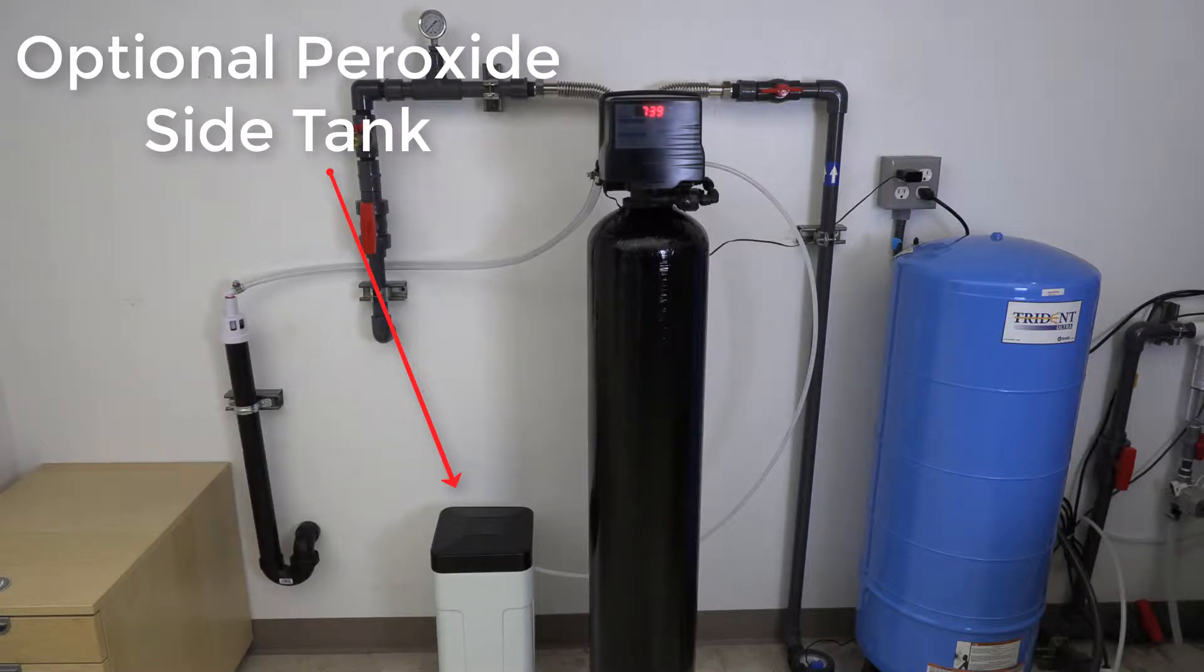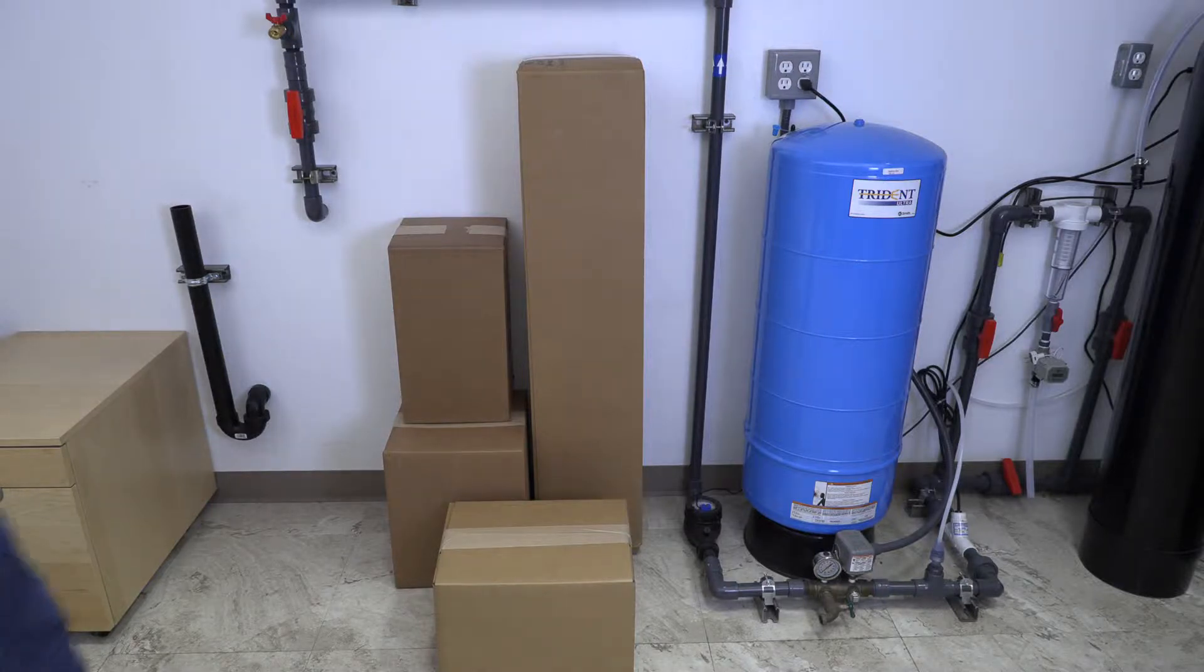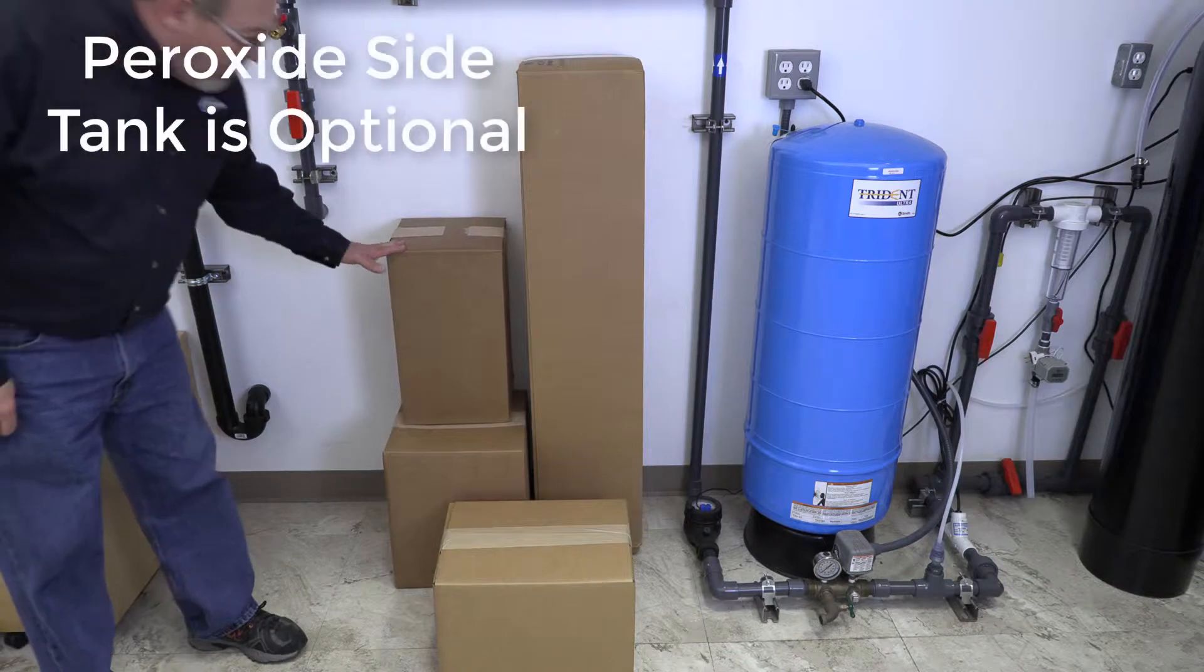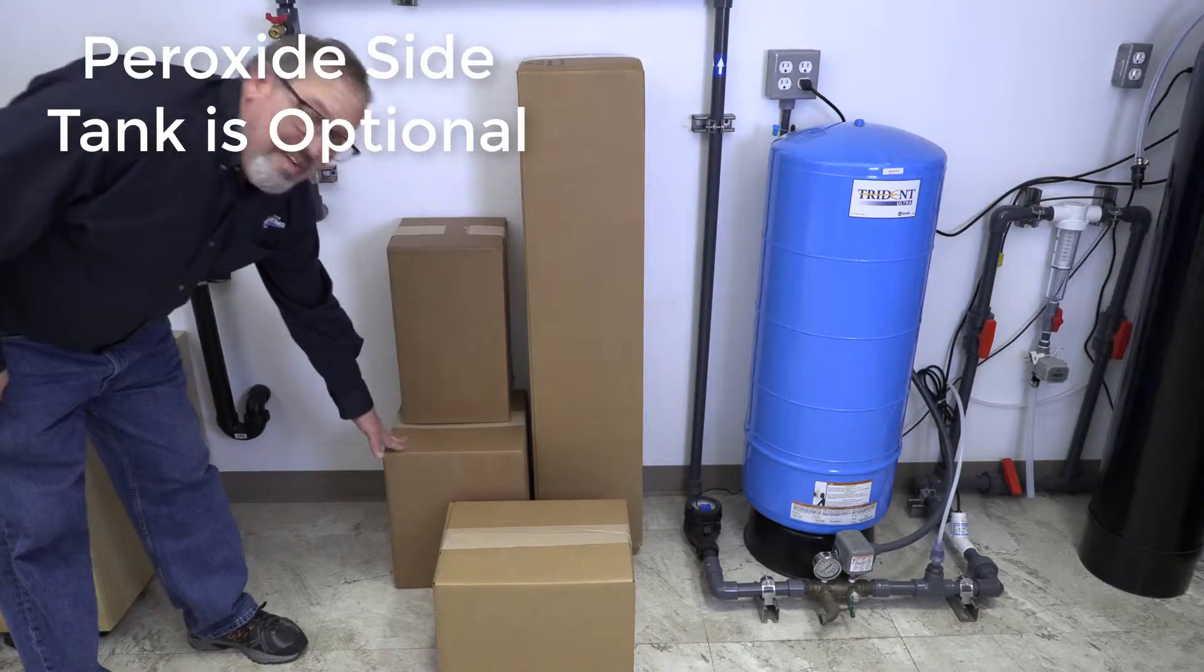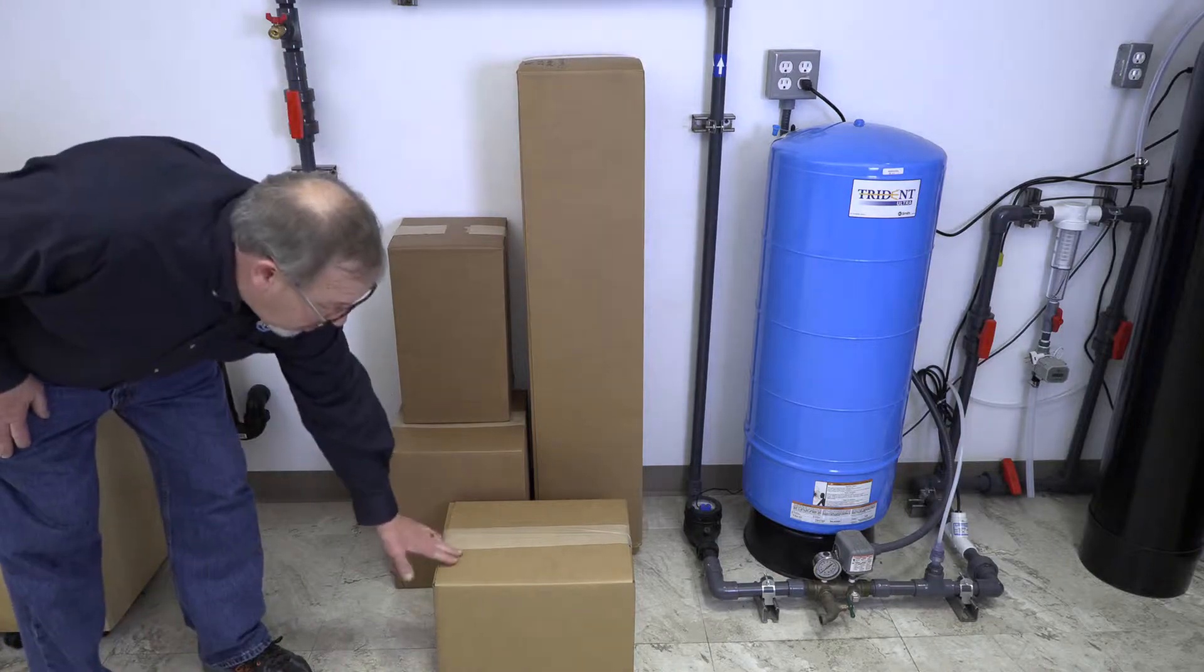When your order arrives, you'll have four boxes for this size system. You will have your media tank, your side hydrogen peroxide tank, your control valve assembly and gravel, and then your carbon media.